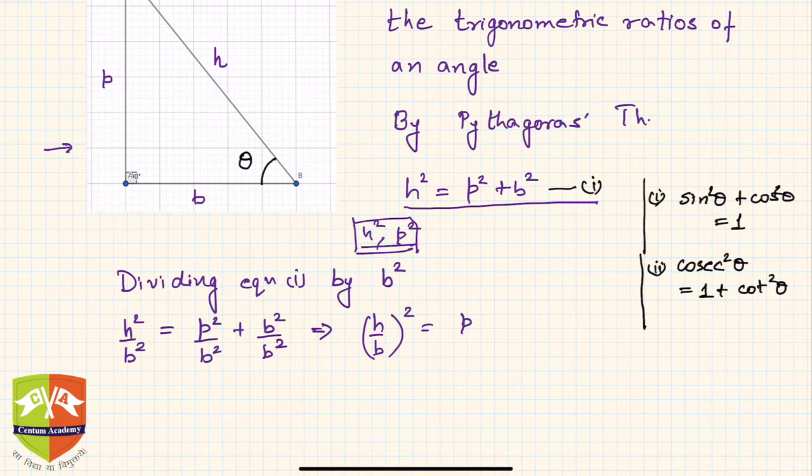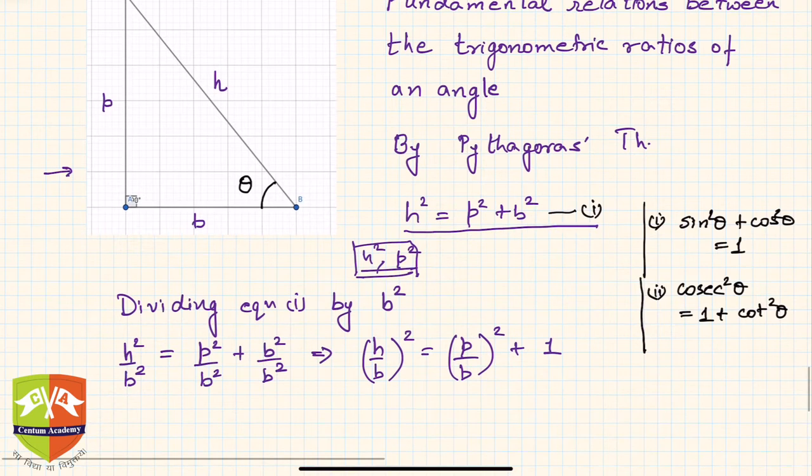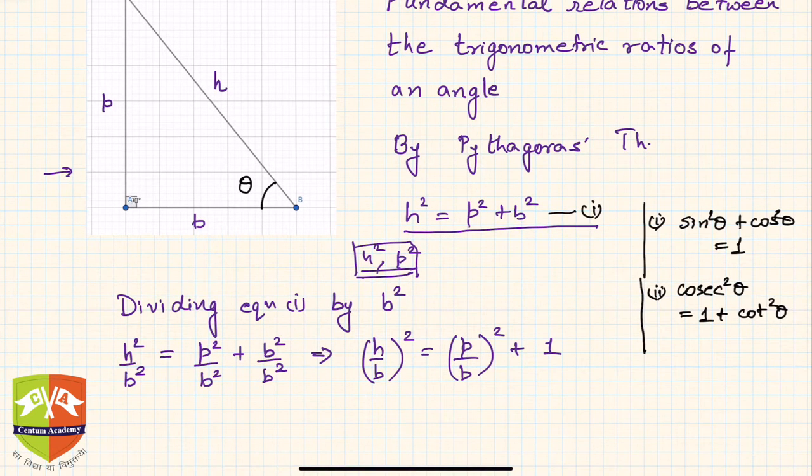Now look at this triangle ABC where this is hypotenuse, this is base, and this is perpendicular. If you see h by b, h upon b is nothing but secant theta, because it is one upon cosine theta.